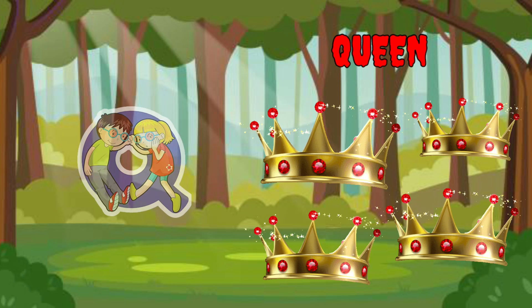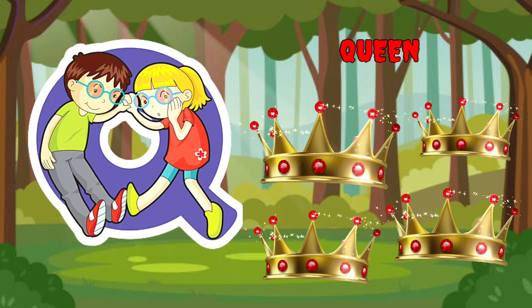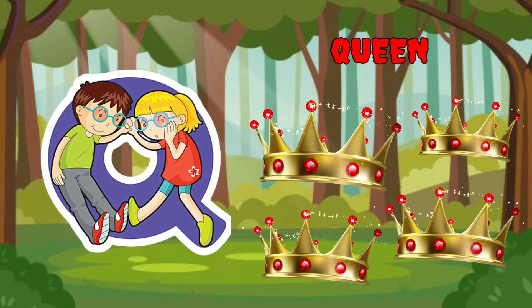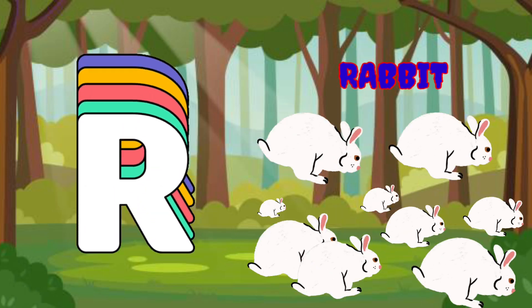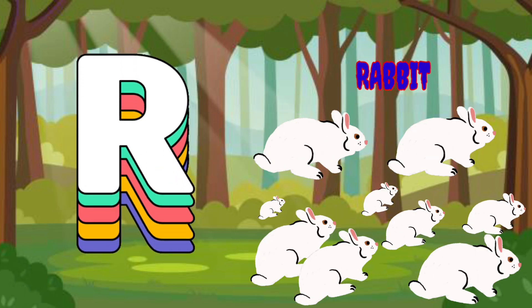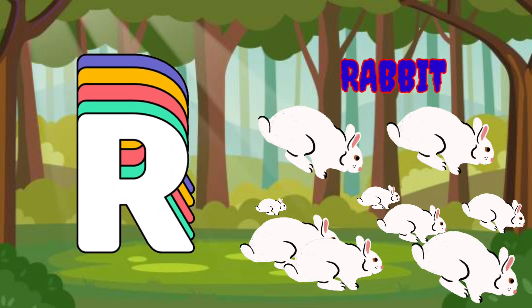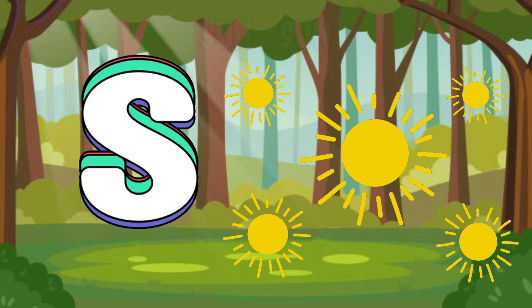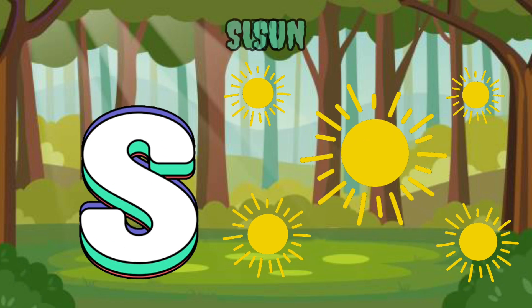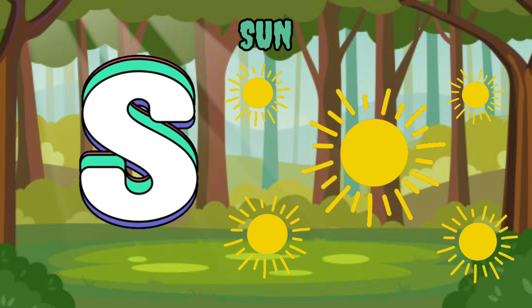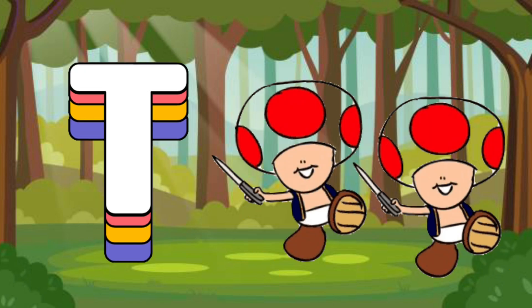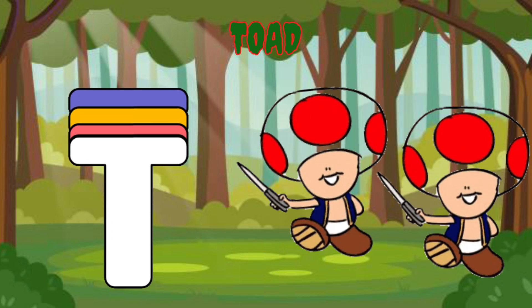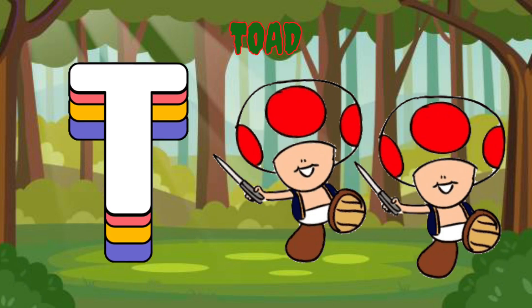Q is for queen, k-k-queen. R is for rabbit, r-r-rabbit. S is for sun, s-s-sun. T is for toad, t-t-toad.